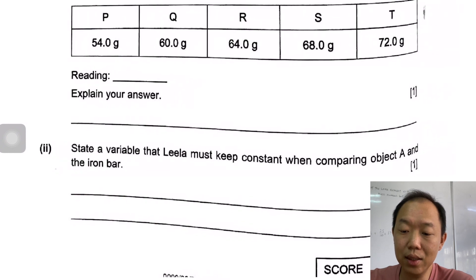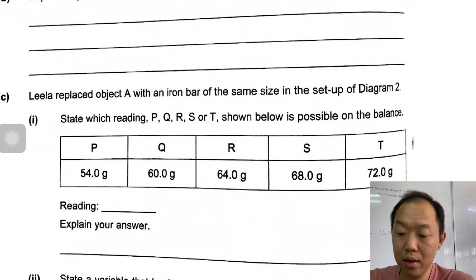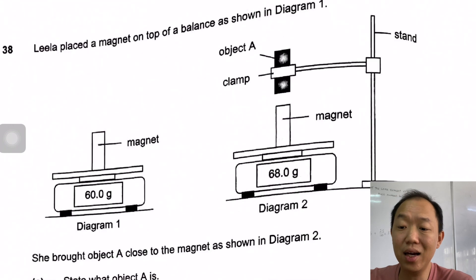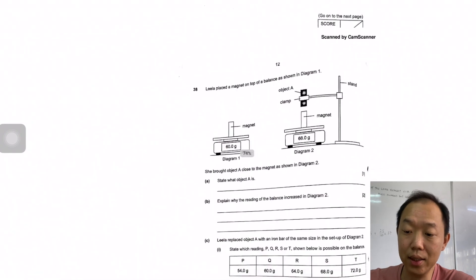State a variable that Leela must keep constant when comparing object A and the iron bar. Probably the size has to be the same. The distance should be the same as well. The distance here should be the same, and the size of object A should be the same. That is a good experiment.